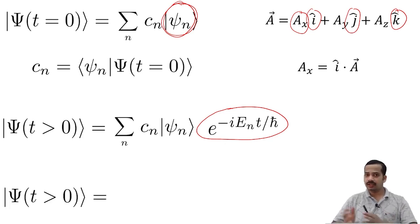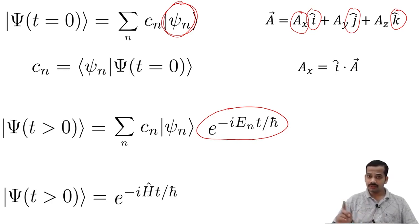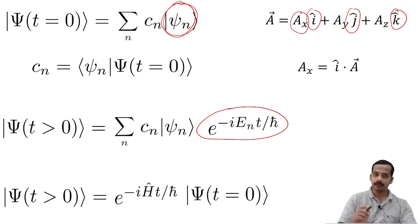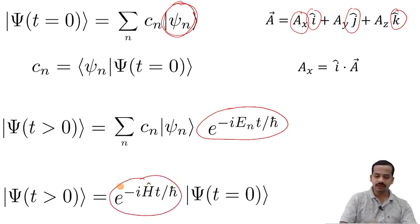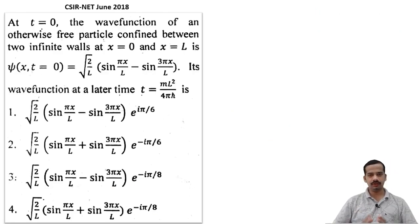The state at t greater than 0 can also be obtained by operating the time evolution operator on the state at t equal to 0. But in many cases, this operator is quite difficult to find. Now let us apply this concept.